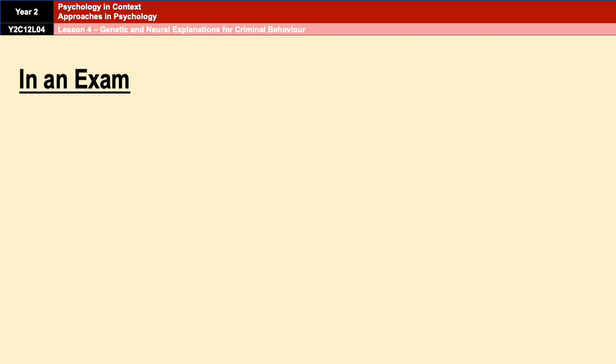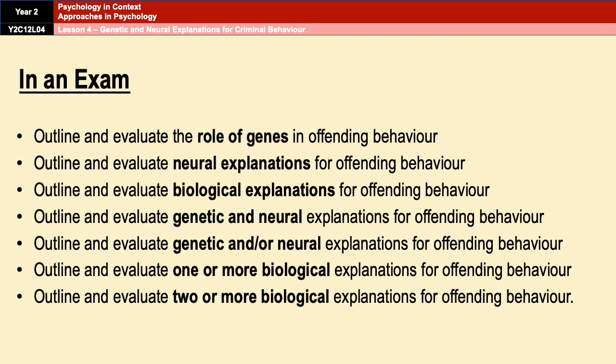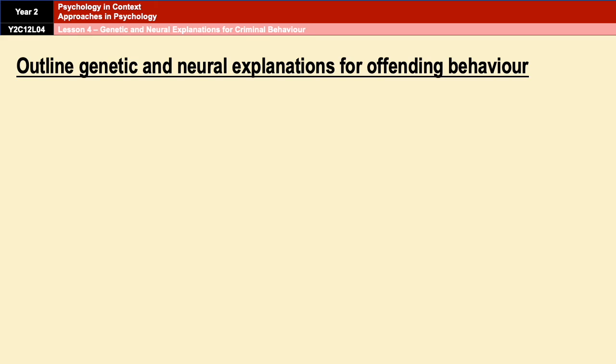This topic comes up in Paper 3, and there is likely to be an essay on it. You could get a multiple choice question, a two, four, six, eight, or sixteen marker. If we assume an essay is going to come up, it can appear in many different ways — each explanation could technically come up as an eight or sixteen marker, but if asking you to outline and evaluate two, it's more likely to be a sixteen marker. You need to be prepared for anything.